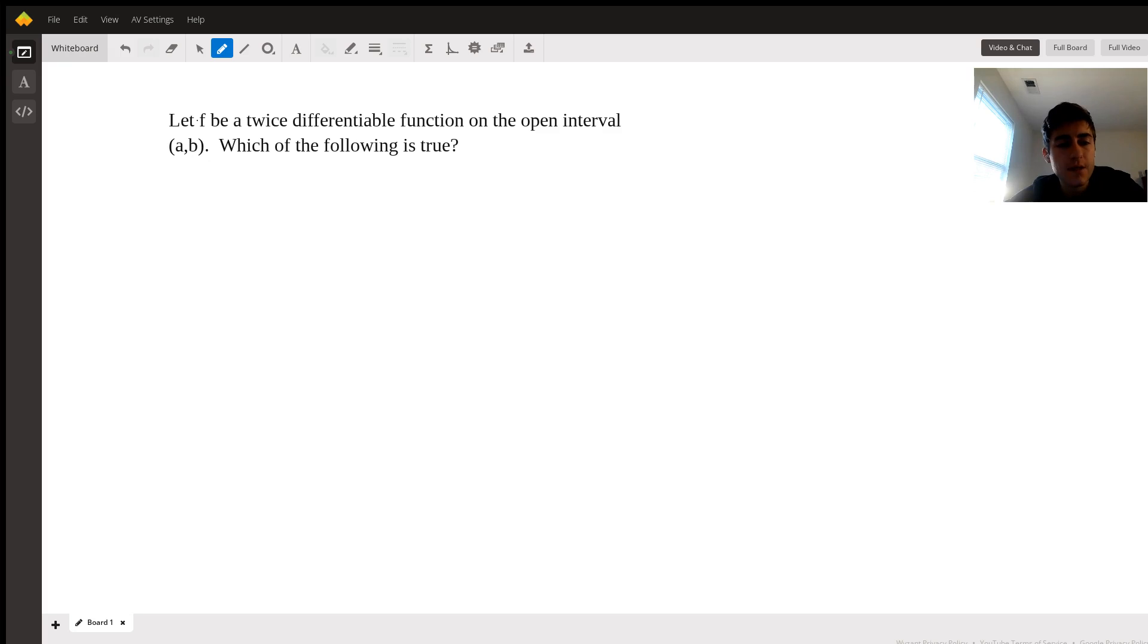So the question is, let f be a twice differentiable function on the open interval from a to b, and we have to determine which of the following statements are true. So before we go about determining which statements are true, let's make sure we understand what the question is saying.